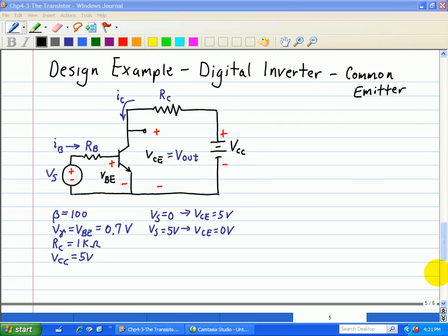So here's another common emitter configuration, but this time it's a design example in which we want to design a digital inverter such that when Vs is zero input, we have an output voltage in the form of Vce equal to 5 volts. And then when Vs is equal to 5 volts, then our output voltage is zero volts. And that's what we mean by a digital inverter.